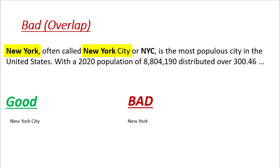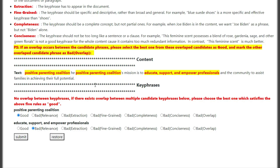Now guys, I hope you now know when to choose the good and bad options. Let's go through some training hits so you can have a better idea. In this hit, if you read the paragraph you will find that the good key phrase is 'positive parenting coalition', and the second key phrase is bad relevance, as it is not showing any relevance with the theme of the topic.